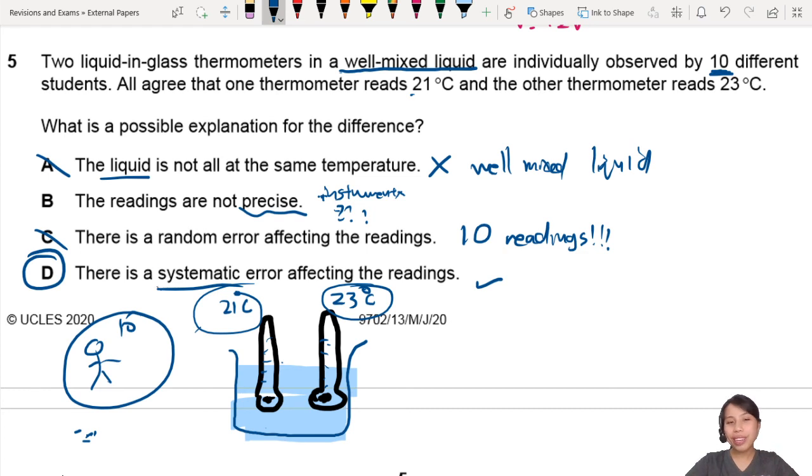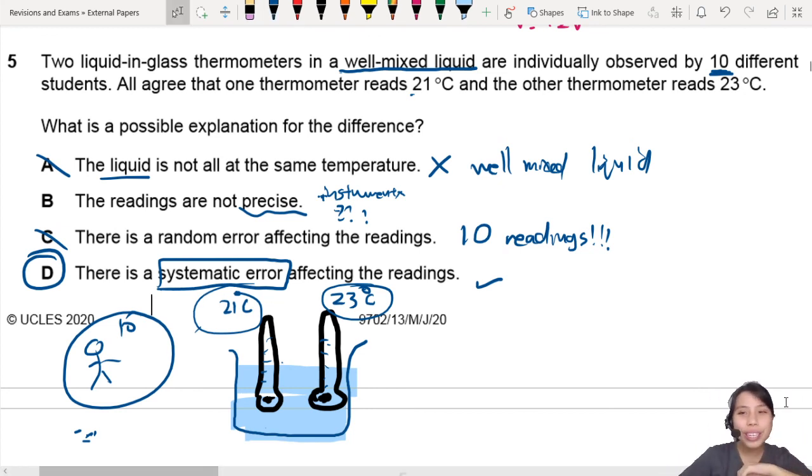If you're wondering what is the systematic error, you will find out in the A2 chapter when we talk about temperature and thermometers. That's all for this question. I will see you in the next one.